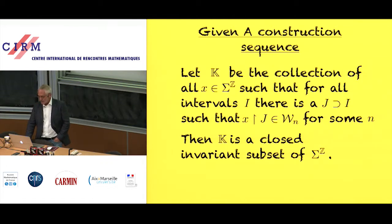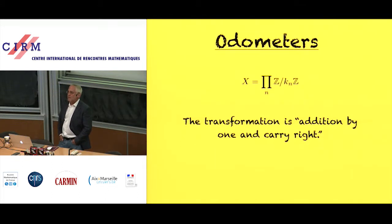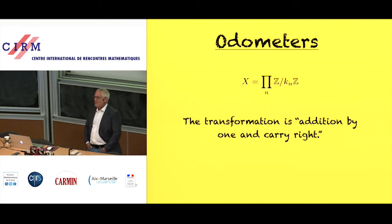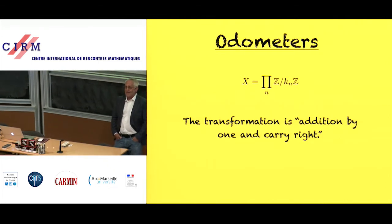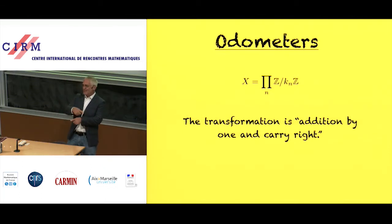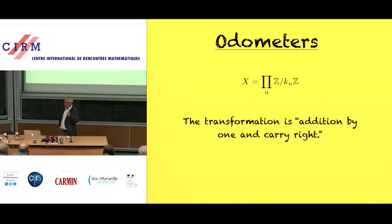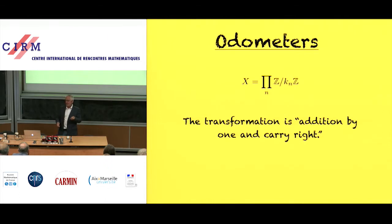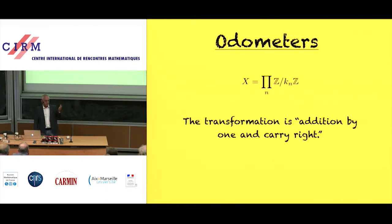An important class is odometer transformations, named after the odometer in your car except we read left to right. The odometer is Z mod k_1Z cross Z mod k_2Z cross Z mod k_3Z and so on, with an invariant measure under the transformation that adds one to the first coordinate and carries over — very familiar is the dyadic odometer where all k_n are two. Here we have the odometer with arbitrary k_n's.